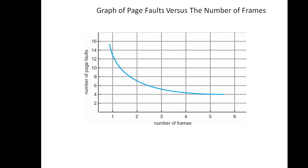To determine the number of page faults for a particular reference string and page replacement algorithm, we must know the number of page frames available. As the number of frames increases, the number of page faults decreases. This curve shows that as the number of frames increases, page faults drop to some minimal level. By adding extra physical memory to increase the number of frames, the number of page faults decreases.